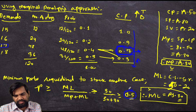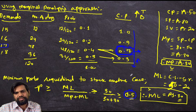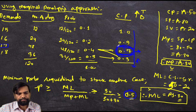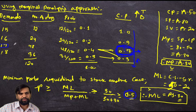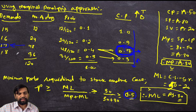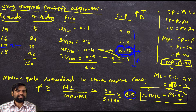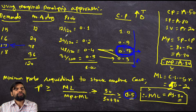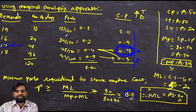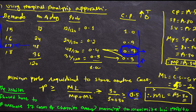The result tells us the cumulative frequency just greater than 0.5 is 0.7, corresponding to 17 cases. Therefore the retailer should purchase exactly 17 cases of carries every morning to maximize profit — not more than 17 and not less than 17. This is our answer for the first question.